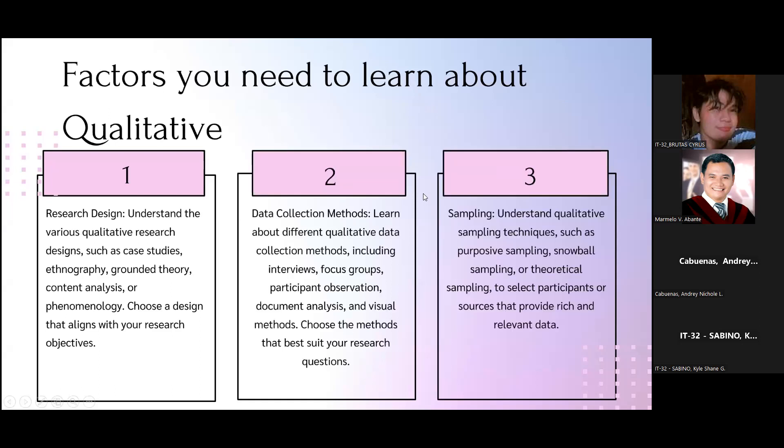Now let's talk about the factors you need to learn about qualitative research. In research design, it is to understand the various qualitative research designs such as case study, ethnography, grounded theory, content analysis, or phenomenology. Choose a design that aligns with your research objective. In data collection methods, learn about different qualitative data collection methods including interviews, focus groups, participant observation, document analysis, and visual methods. Choose the method that best suits your research question.